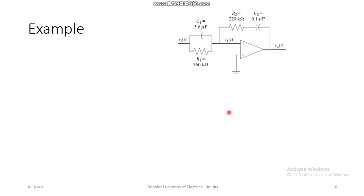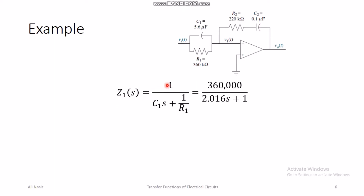For example, consider an op-amp circuit where Z₁ is the parallel combination of a capacitor C₁ = 5.6 μF and a resistor R₁ = 360 kΩ, and Z₂ is the series combination of a resistor R₂ = 220 kΩ and a capacitor C₂ = 0.1 μF. For Z₁ (parallel combination), we take the reciprocal of the sum of reciprocals of impedances. After simplification, Z₁ = 360,000 / (2.016s + 1).